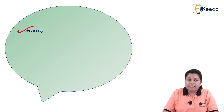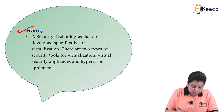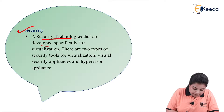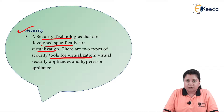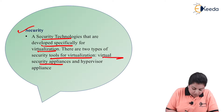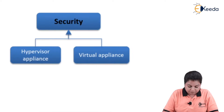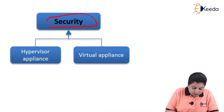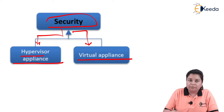The next is security in virtualization. Security technologies are developed specifically for virtualization. There are two types of security tools: virtual security appliances and hypervisor appliances. Security is thus divided into two subdomains — virtual appliance and hypervisor appliance.